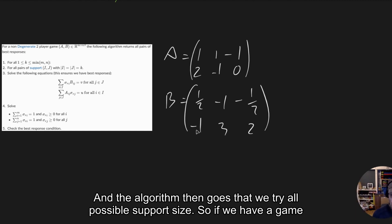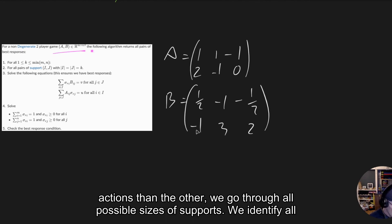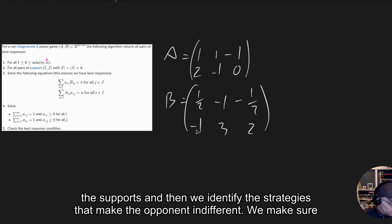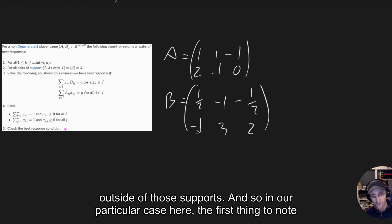The algorithm goes through all possible support sizes. If we have a game that's not square — in other words, one player might have more available actions than the other — we go through all possible sizes of supports. We identify all the supports, then identify strategies that make the opponent indifferent. We make sure we have probabilities, and finally check that there's nothing better outside of those supports.